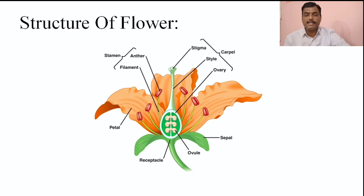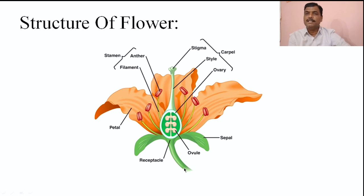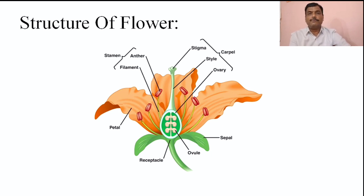The structure of the flower we have already discussed in the 11th standard. Here we will only revise the structure of the flower. The stalk of the flower is known as the pedicel. The upper portion of the pedicel is the receptacle, also known as the thalamus. On this thalamus, different types of floral whorls are arranged. These floral whorls are of two types: essential floral whorls and non-essential floral whorls. The non-essential whorls do not participate in sexual reproduction, while the essential whorls — androecium and gynoecium — directly participate in sexual reproduction.